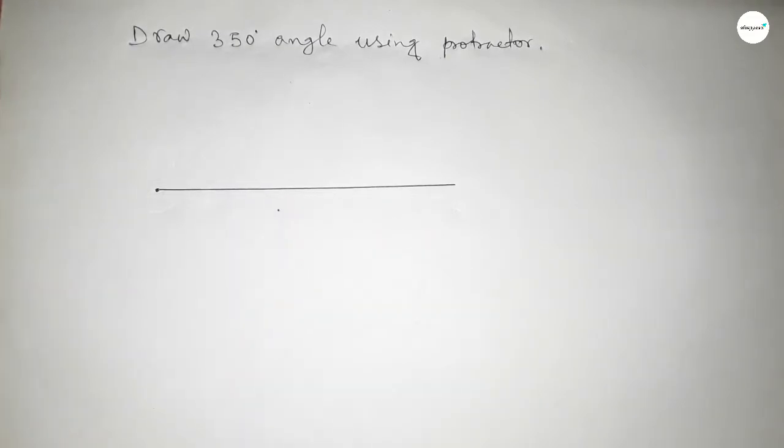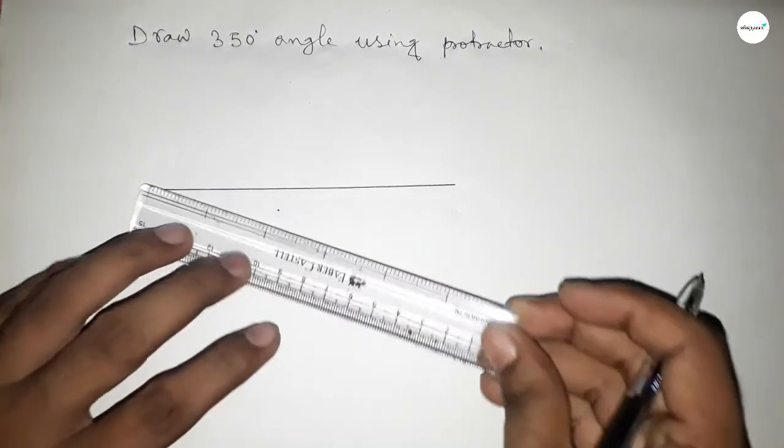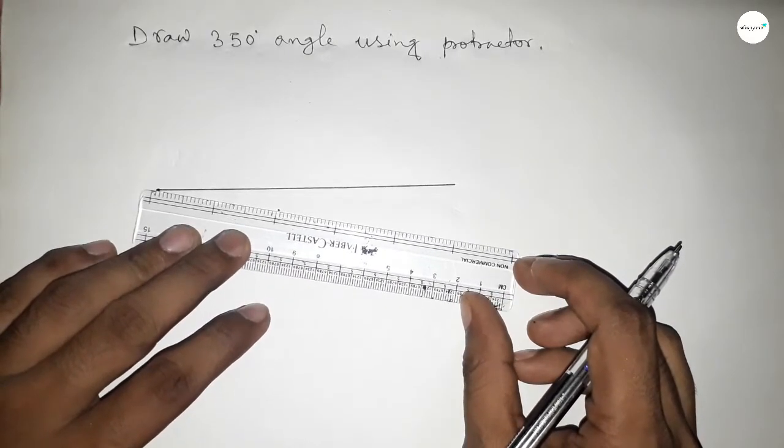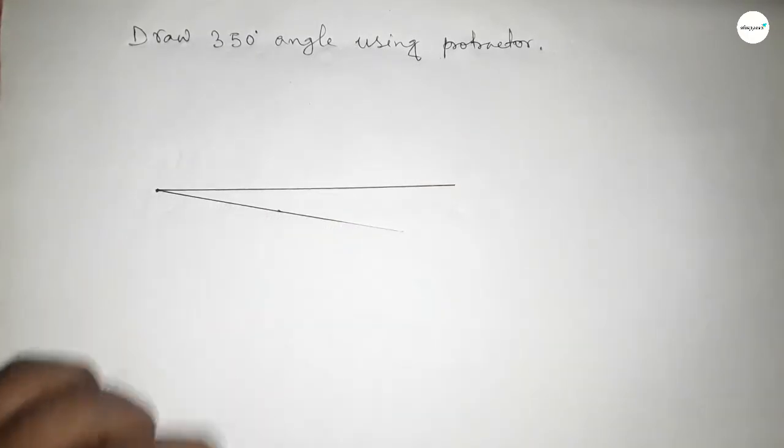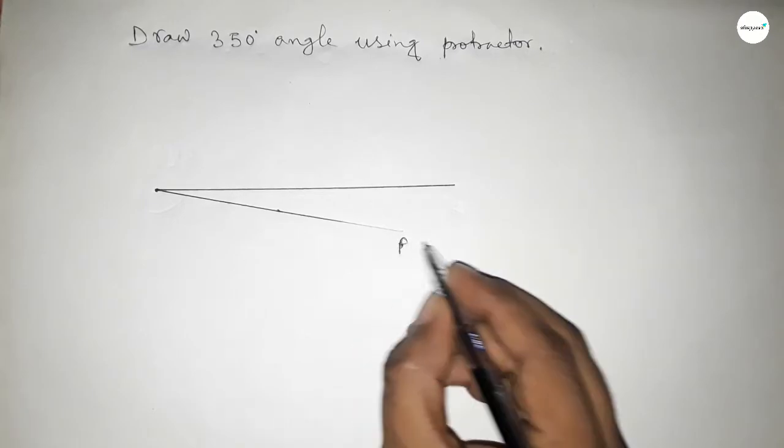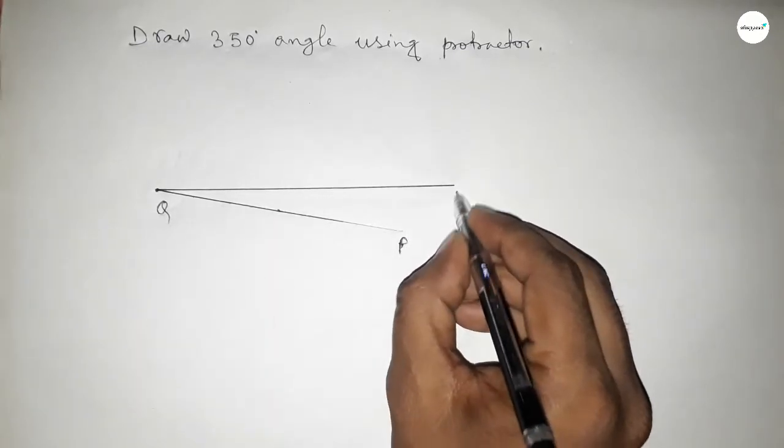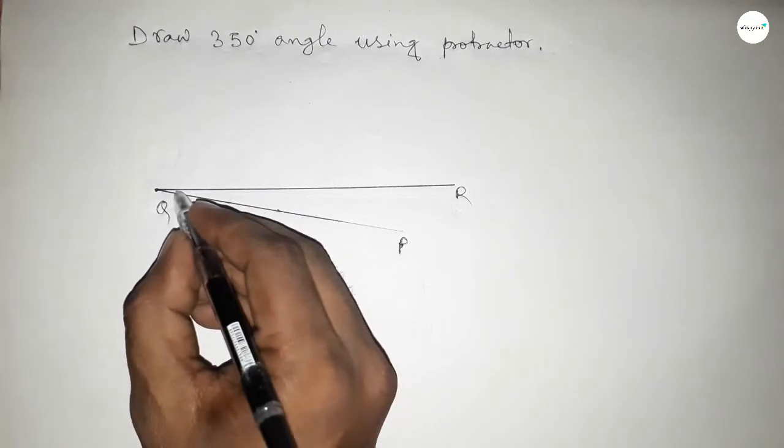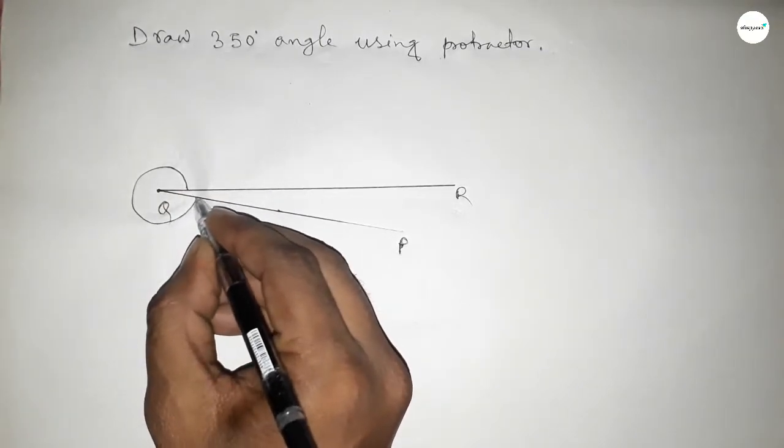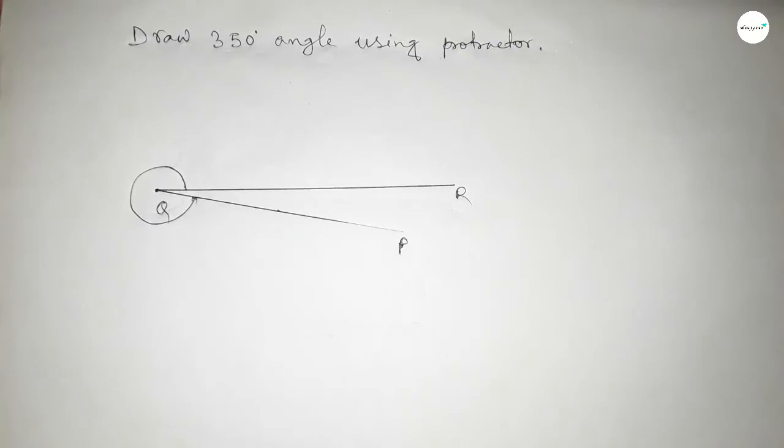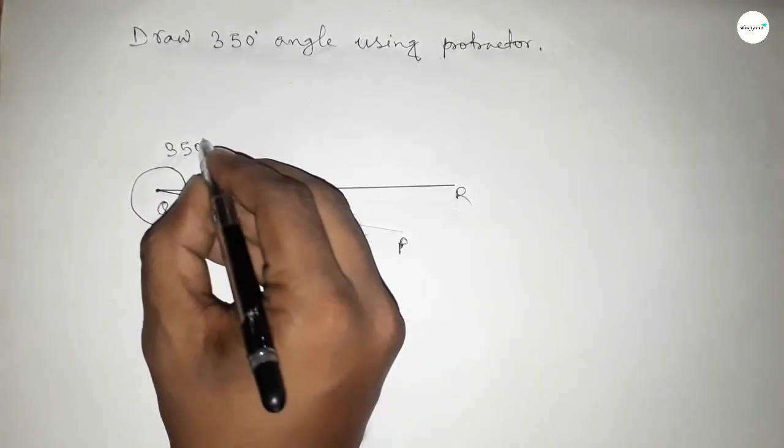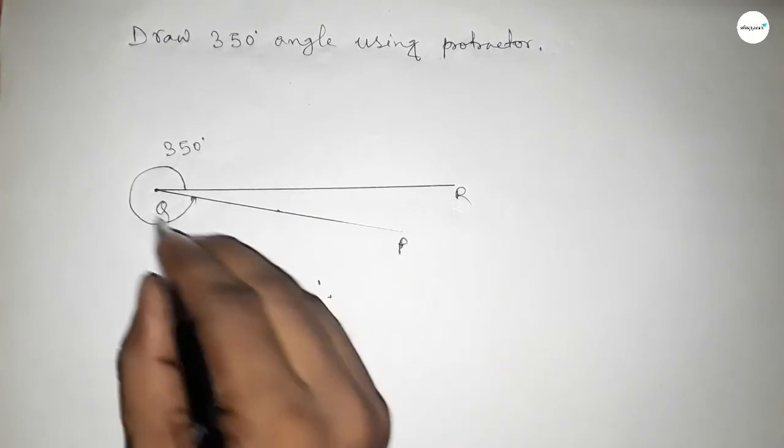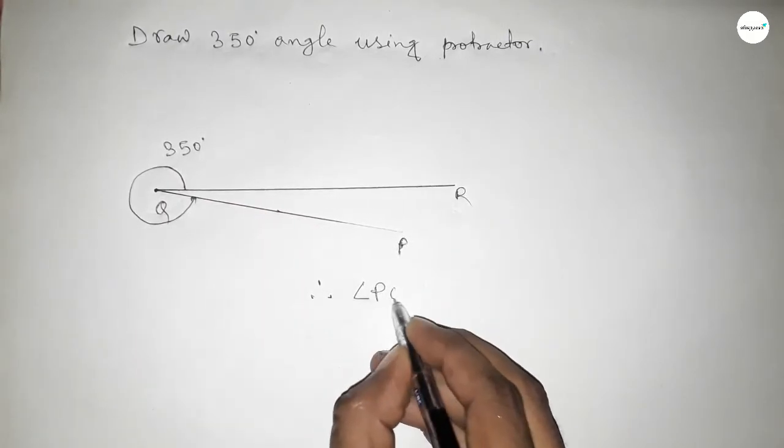So now joining this to get 350 degree angle. So this is P, Q, and R. So angle PQR, so this is angle PQR and this is 350 degree angle. So this is 350 degree.